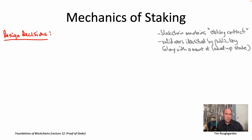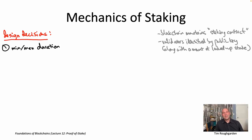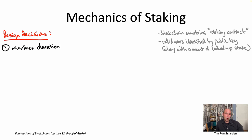There are several decisions that need to be made around when you can deposit and withdraw. For example, you need to decide if there is a minimum and/or maximum duration that some node can enroll in this staking contract. Different proof-of-stake blockchain protocols tend to make different choices. Some protocols don't have any minimum duration at all — you can literally deposit and immediately withdraw again.